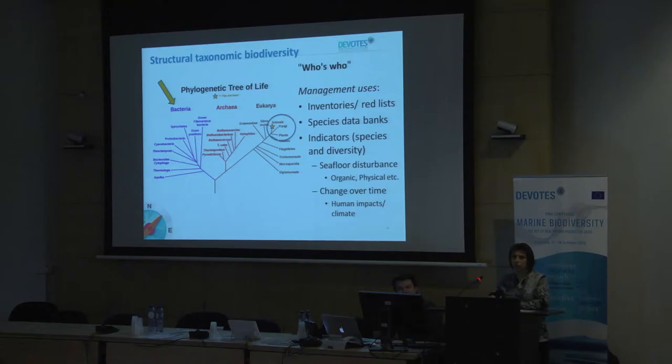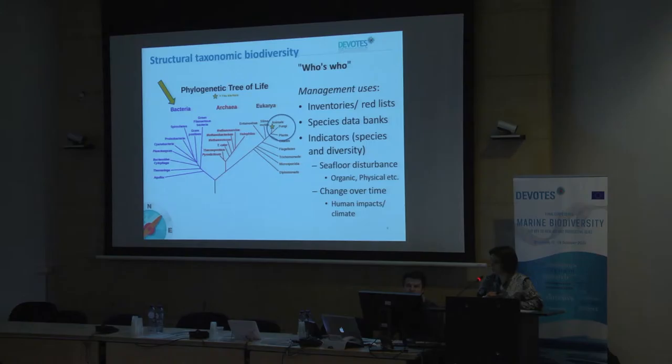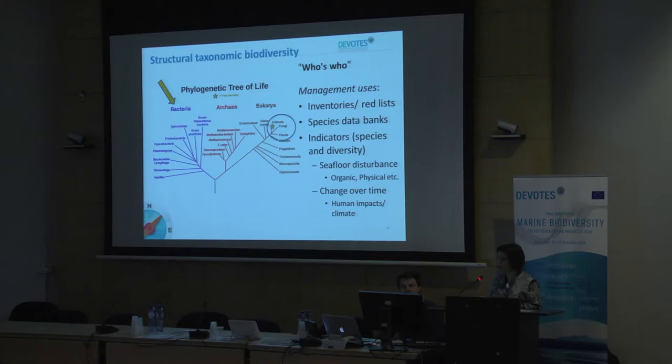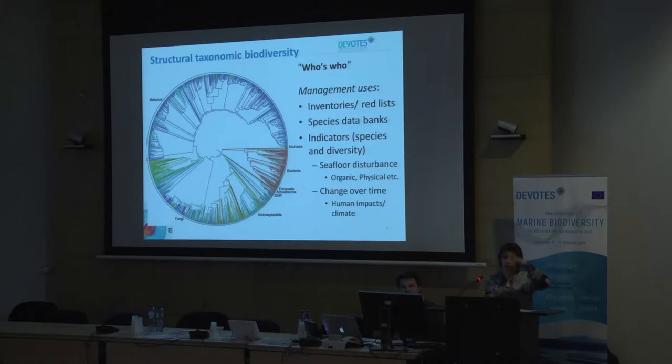So who's going to use this? Inventories, red lists, national and international. Numbers of species and abundance counts are used as indicators of, for example, seafloor disturbance and looking at change over time due to either human impacts or climate. As Mike is very fond of these 'horrendograms,' our conceptual understanding has to be a simplification of something immensely complex — our brains can't cope with this amount of complexity.